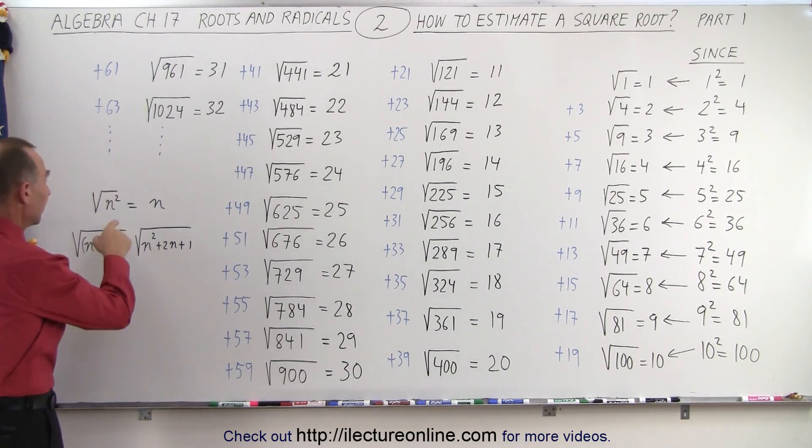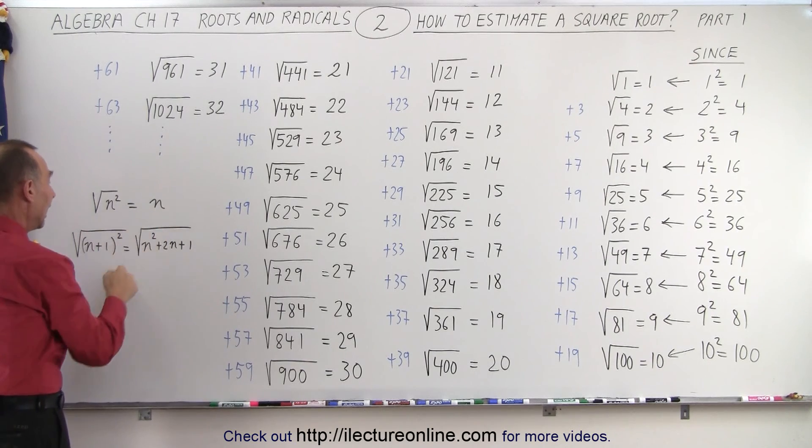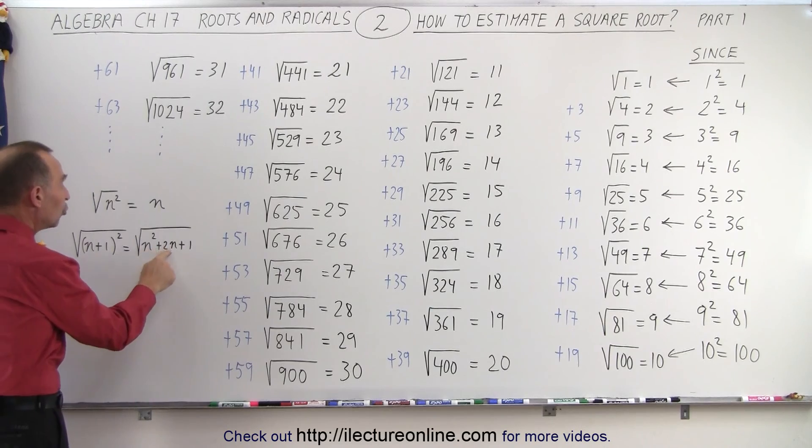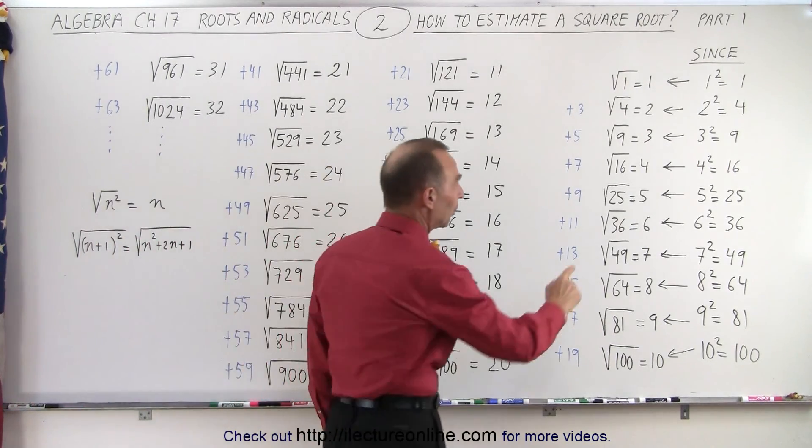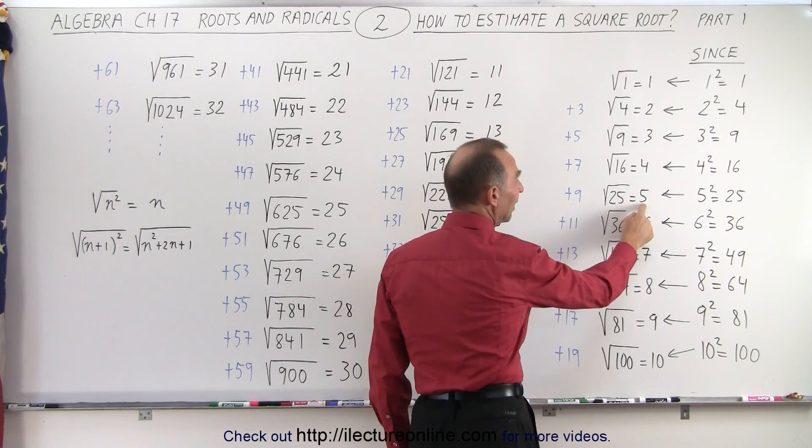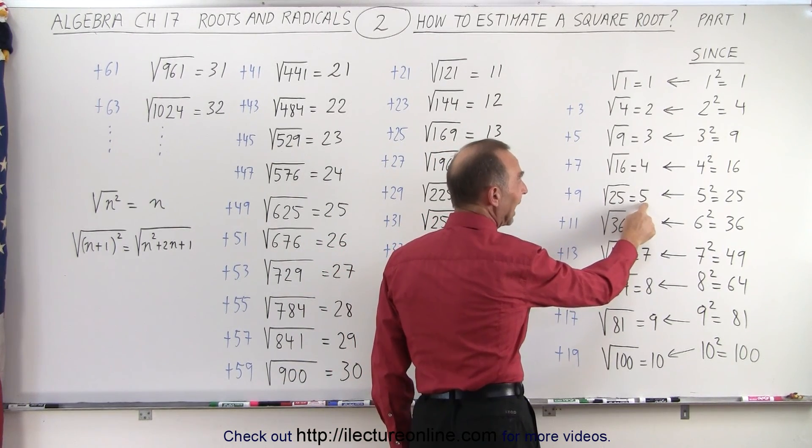From the general formula here. Notice that the square root of n squared is equal to n. And then if we take the square root of one number that's bigger, we get n squared plus 2n plus 1. So in other words, let's say we have the square root of 25 that's equal to 5. If we now double this number and add 1 to that, 2 times 5 is 10, plus 1 is 11.